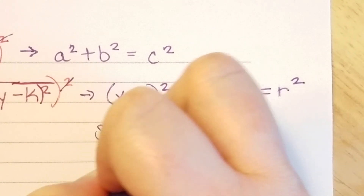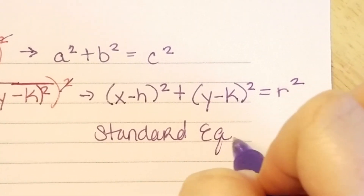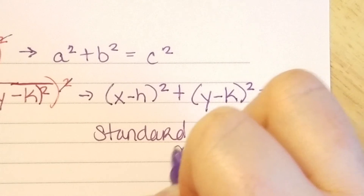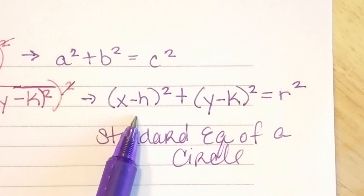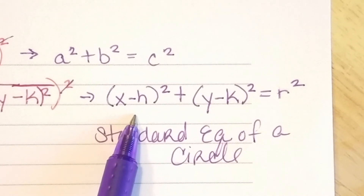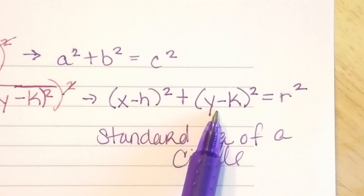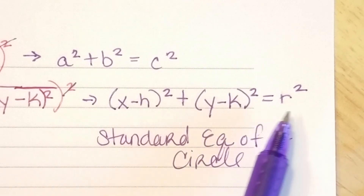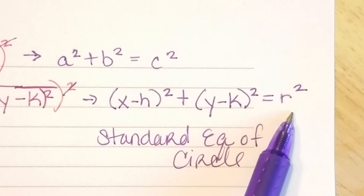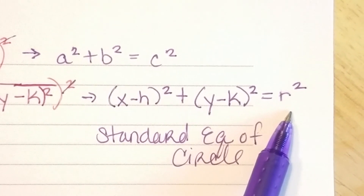And there you go — now we have the standard equation of a circle. So x minus h is the horizontal distance from the center of the circle to any point on the circle. And r is the length of the radius — the length of the hypotenuse of any right triangle we could form on this circle.